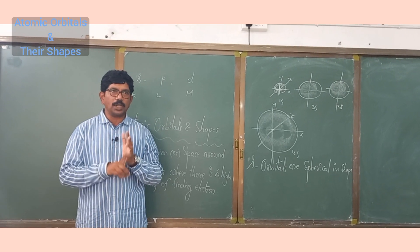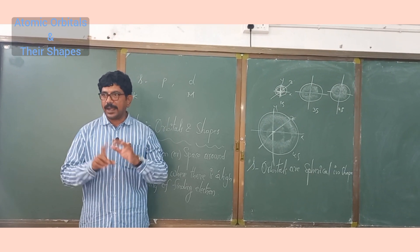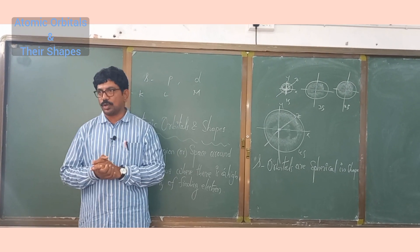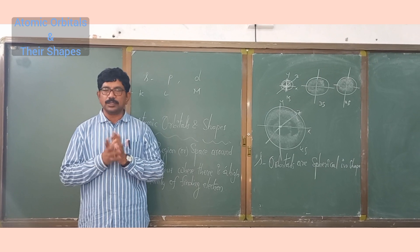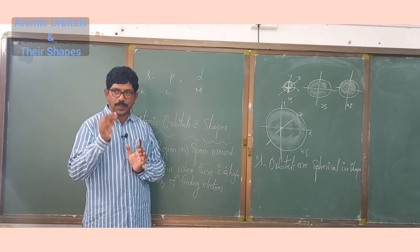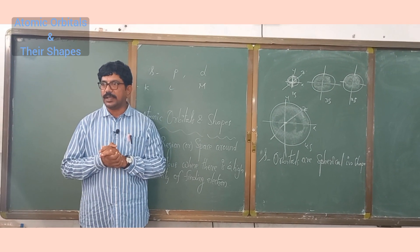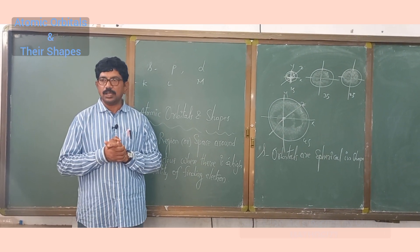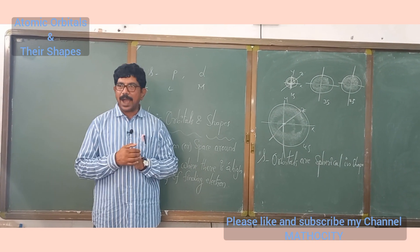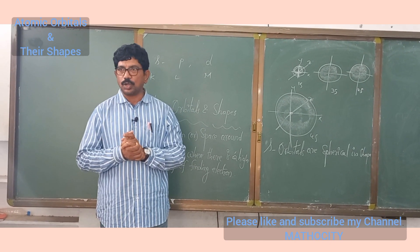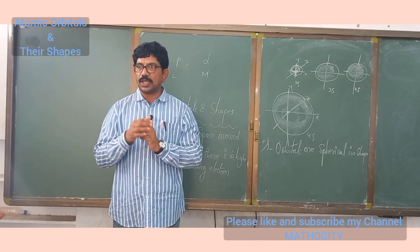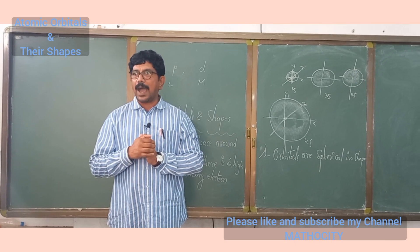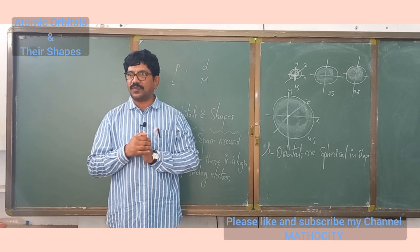An atomic orbital is the region around the nucleus where the probability of finding the electron is more. That region or space is known as an atomic orbital. An orbit, by contrast, is the path proposed by Niels Bohr around the nucleus. Orbits are circular in shape, whereas orbitals have different shapes.